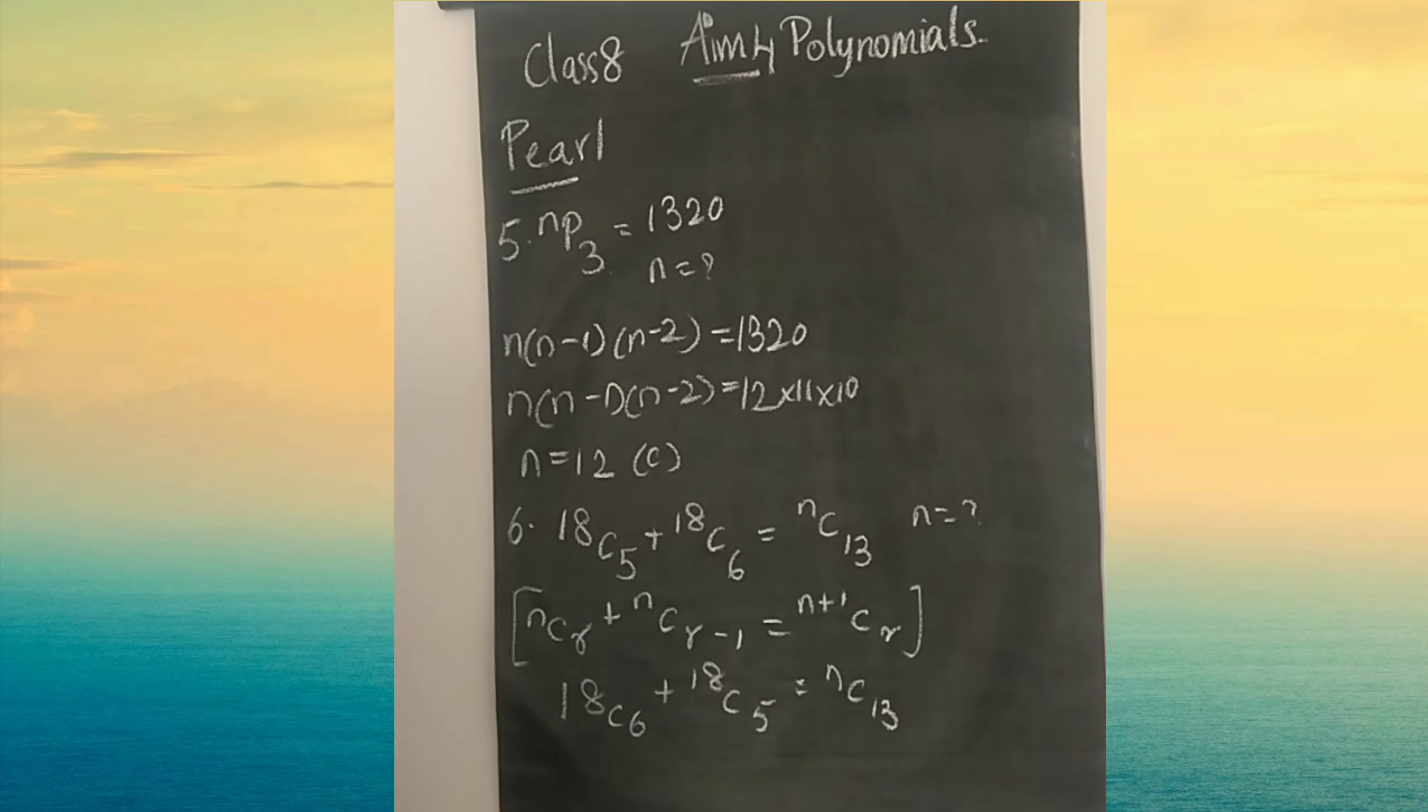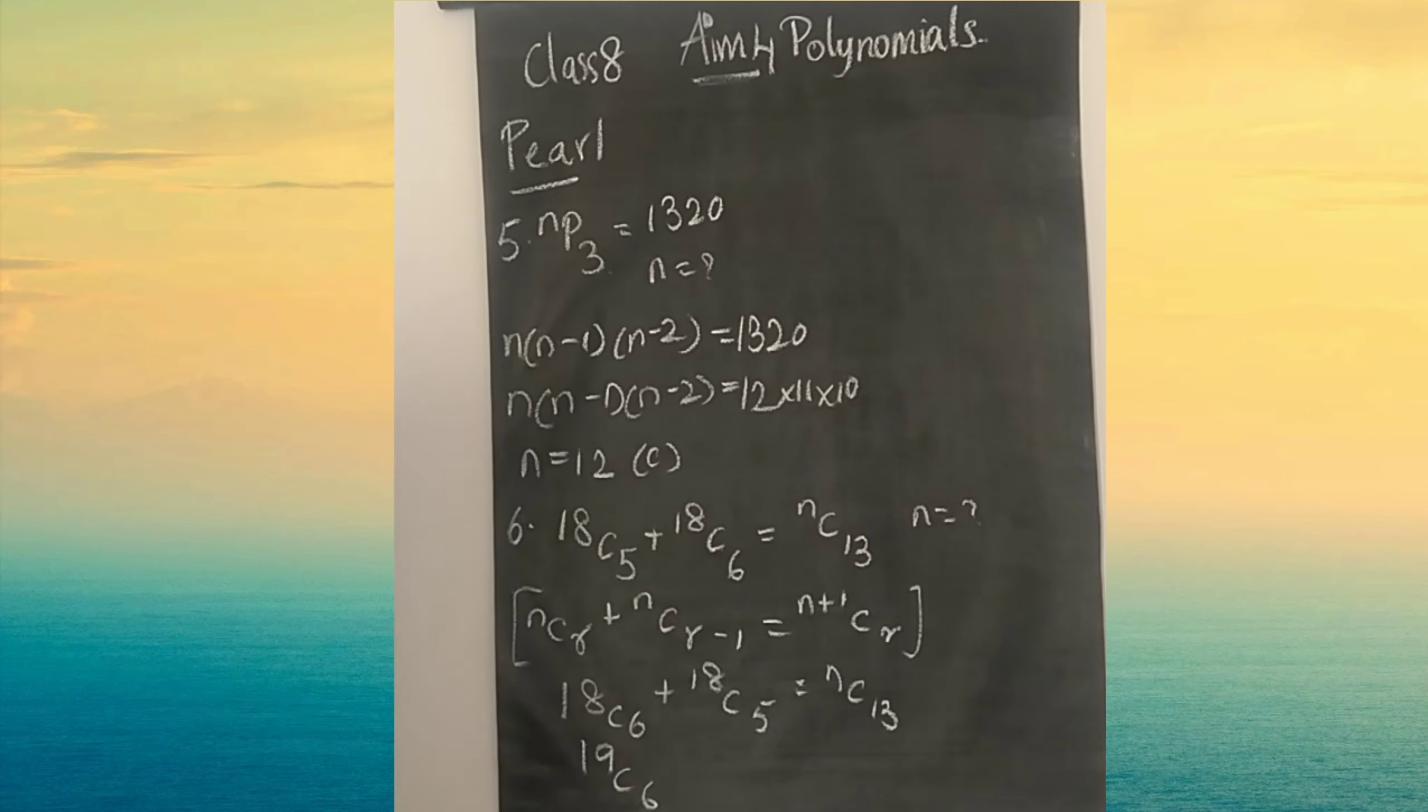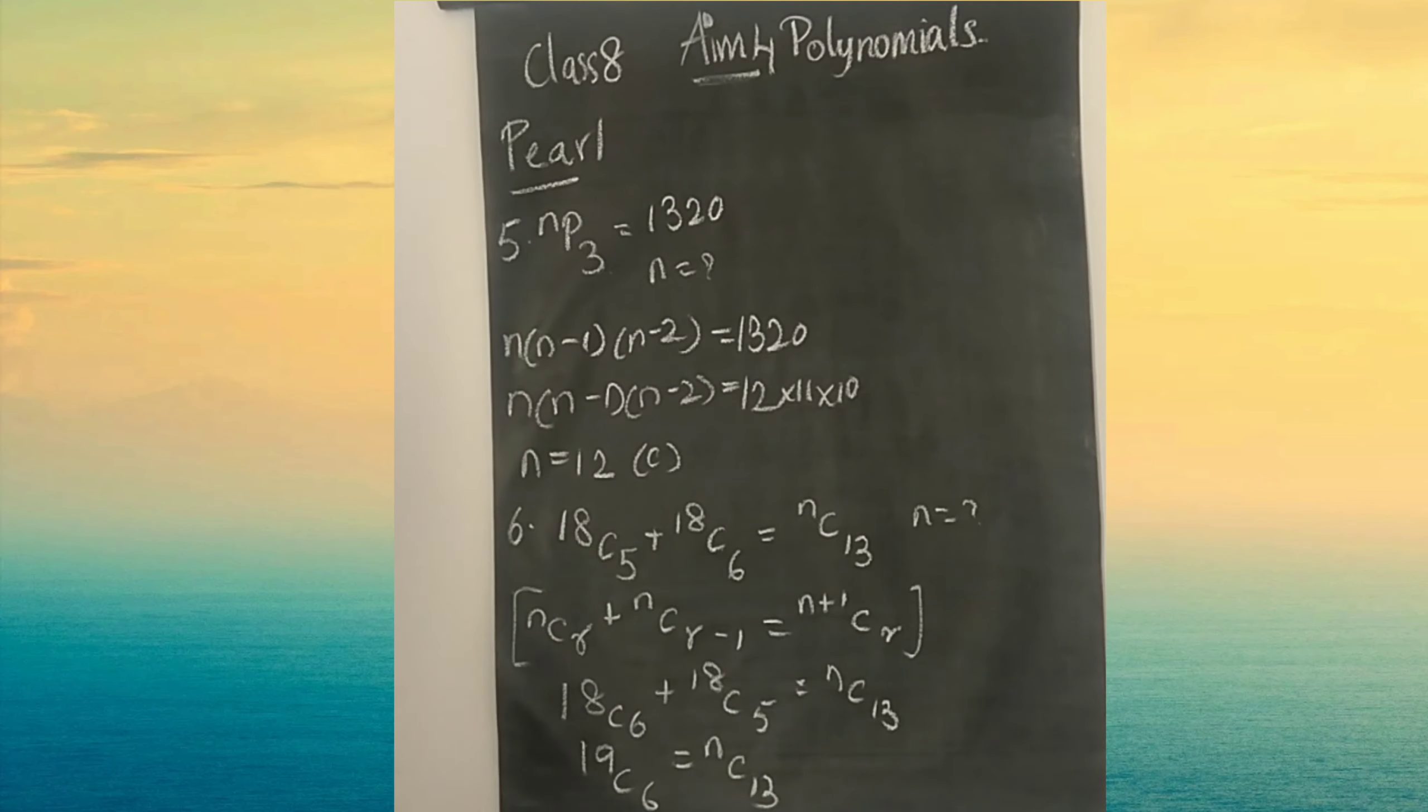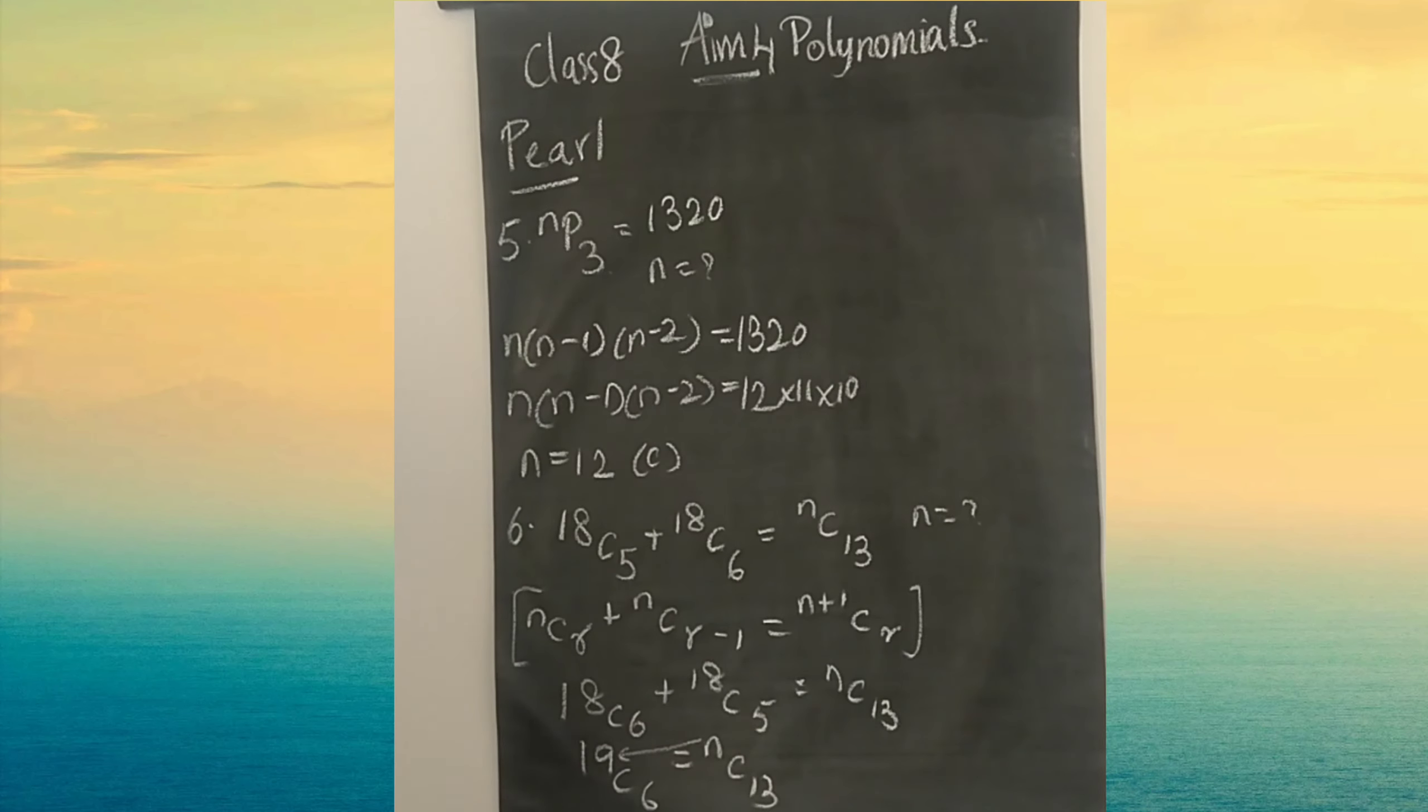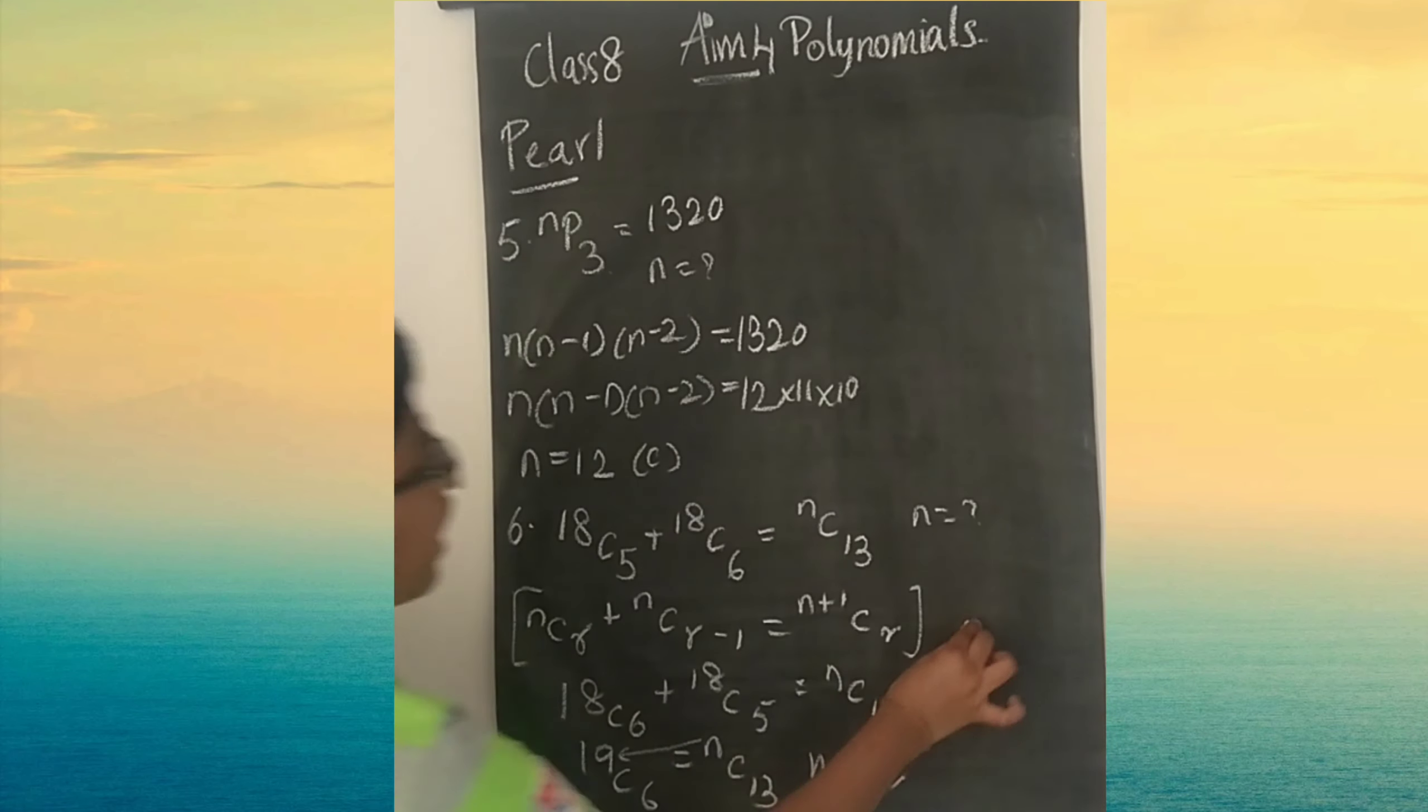When you add up, it's going to be 19C6. That equals nC13. The up number will be mattering. N is 19, option A.